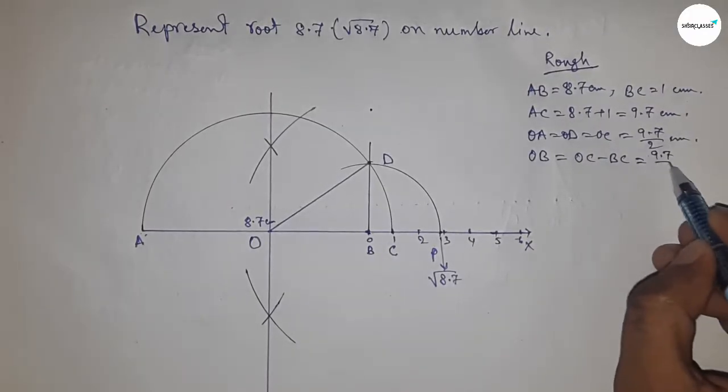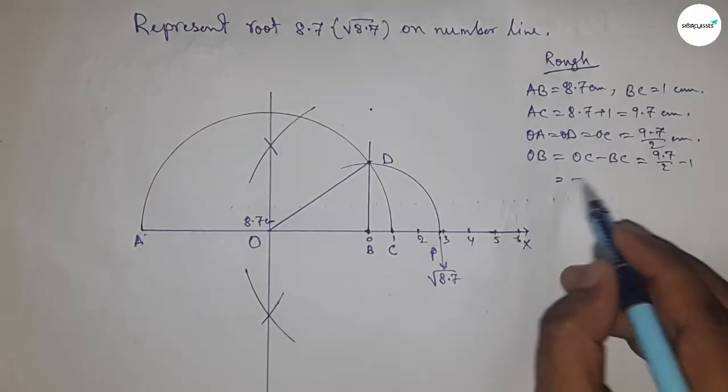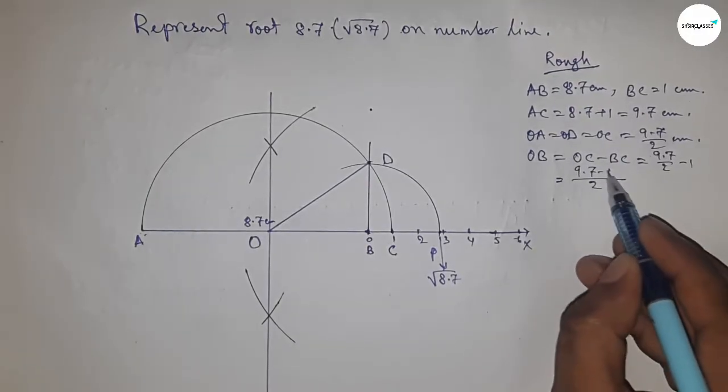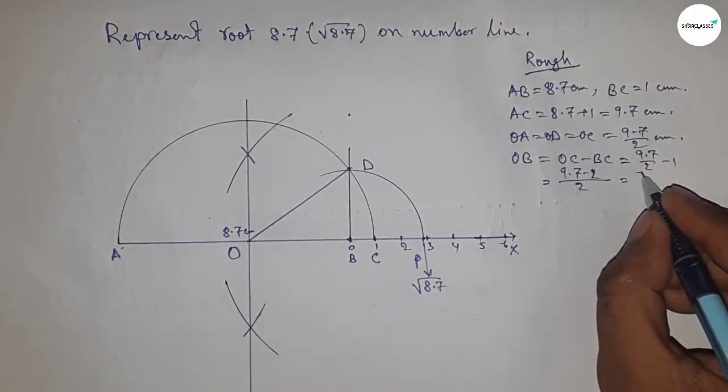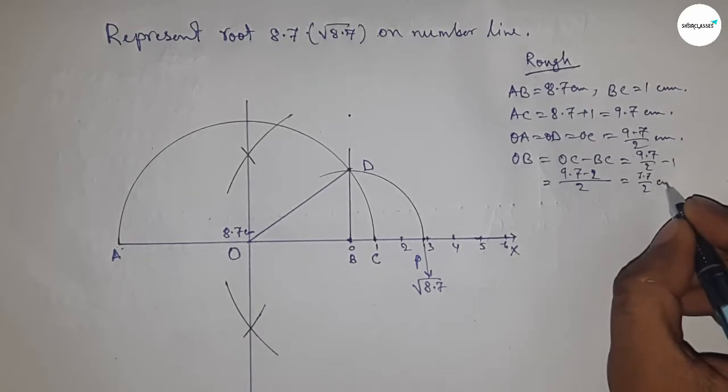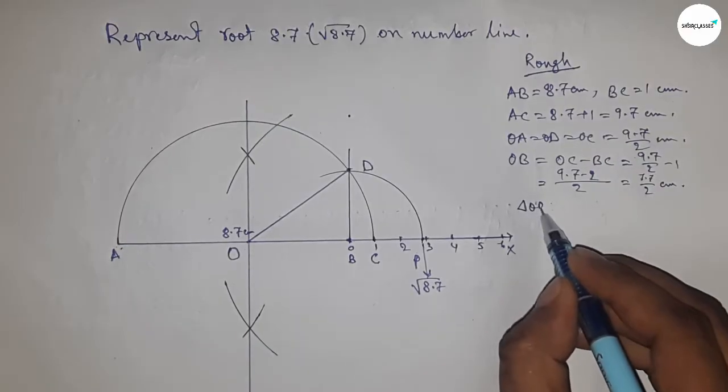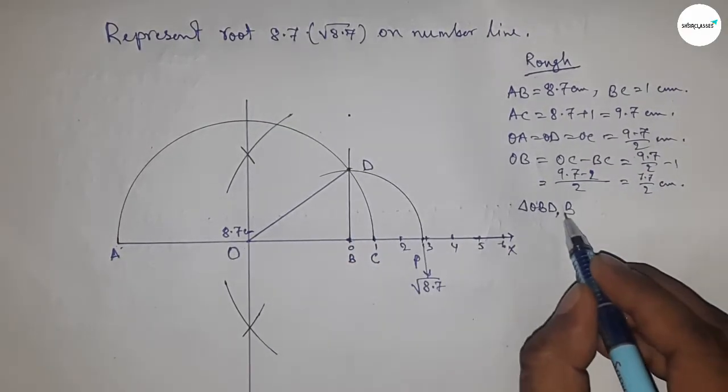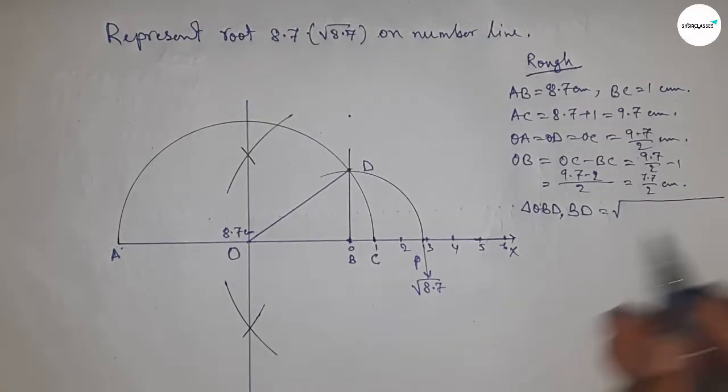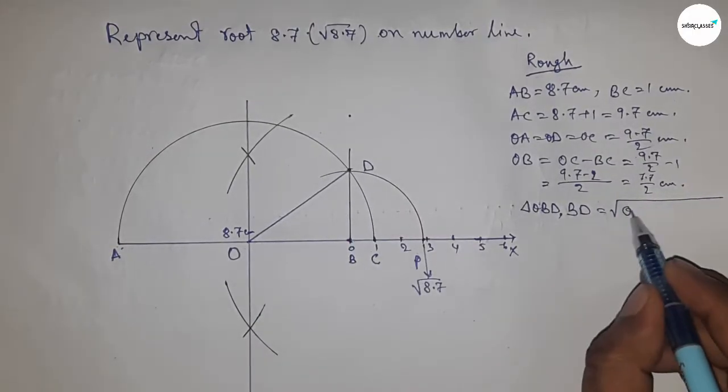Putting the values of OC and BC, we calculate this as 7.9 by 2 cm. From right angle triangle OBD, by Pythagorean theorem, BD equals root of OD squared minus OB squared.